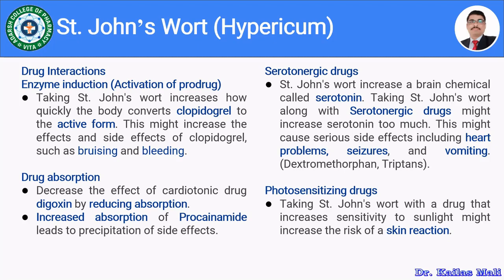Moving towards drug interactions related to absorption — alteration in drug absorption. There are two cases: in the first case, Hypericum decreases the absorption of a drug, and in the second case, it increases the absorption. Hypericum decreases the effect of the cardiotonic drug digoxin by reducing its absorption. Digoxin is used for congestive cardiac failure and has a very narrow dose range. Combining digoxin with Hypericum reduces its absorption, potentially precipitating congestive cardiac failure. Furthermore, Hypericum increases the absorption of procainamide, which may lead to precipitation of procainamide's side effects.